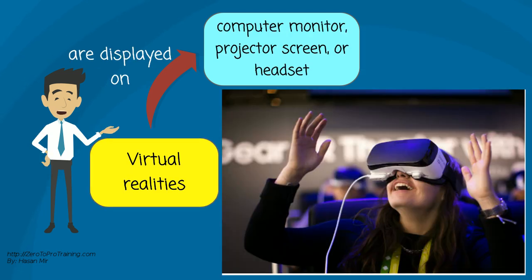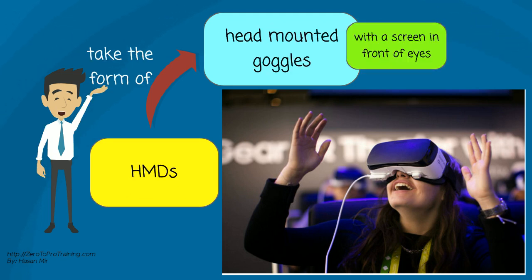Most modern virtual realities are displayed either on a computer monitor, a projector screen, or with a virtual reality headset, also called a head-mounted display or HMD. HMDs typically take the form of head-mounted goggles with a screen in front of the eyes.